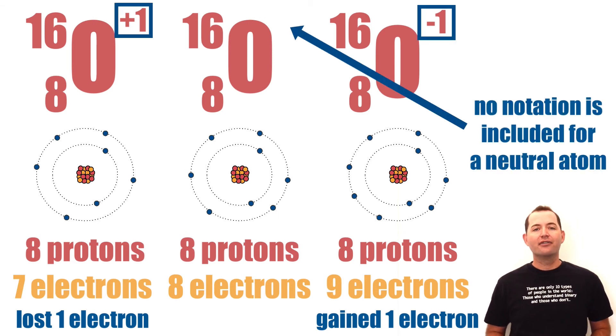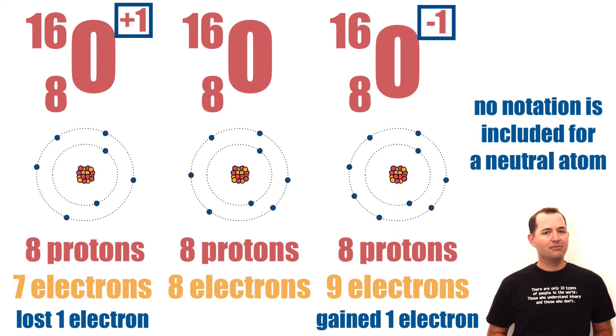We can also show ions on our atomic notation by including a symbol for the positive or negative charge to the top right of the element symbol.